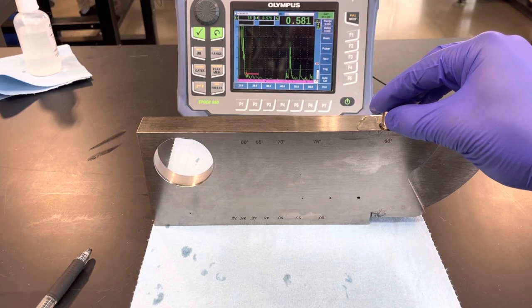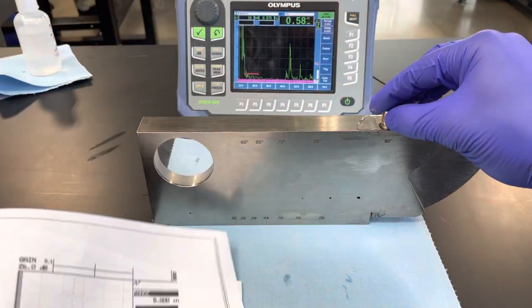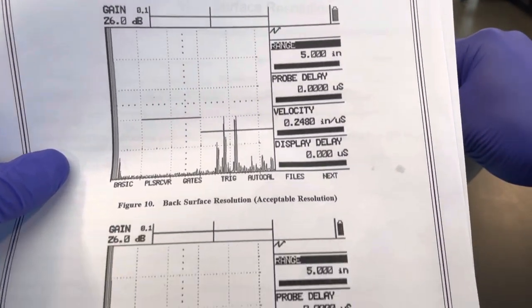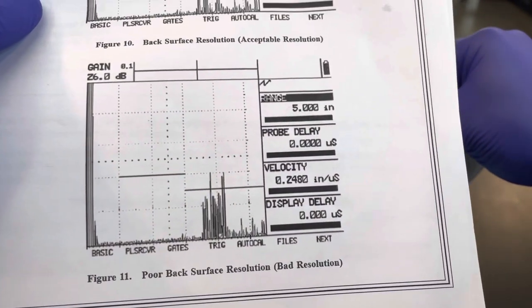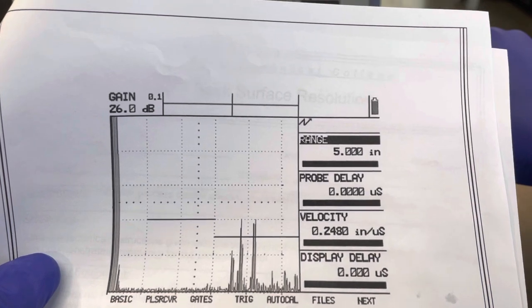This chart here shows what the top one is supposed to look like and what it is not supposed to look like. You can see ours looks much more like the top one.